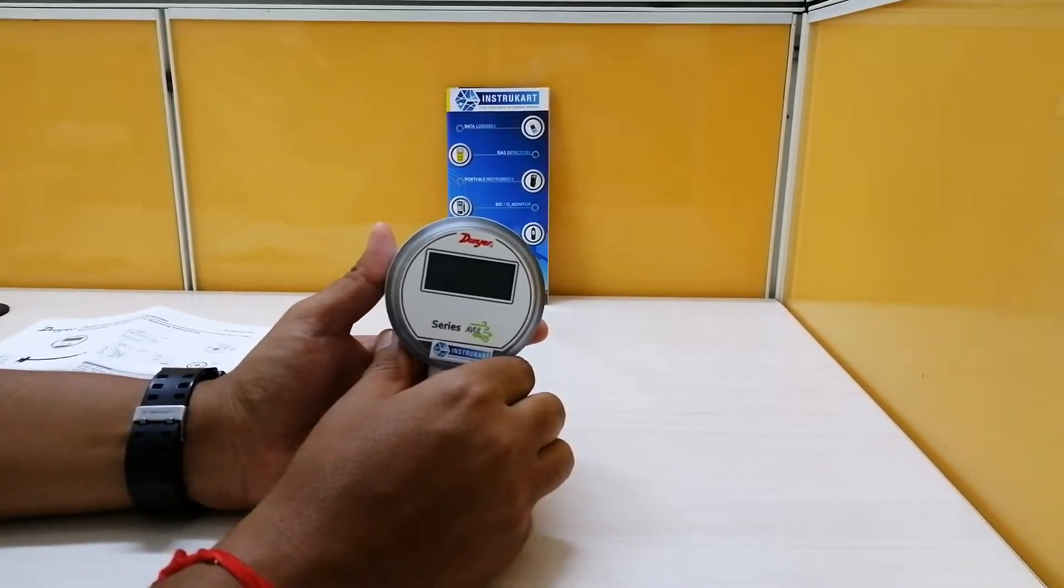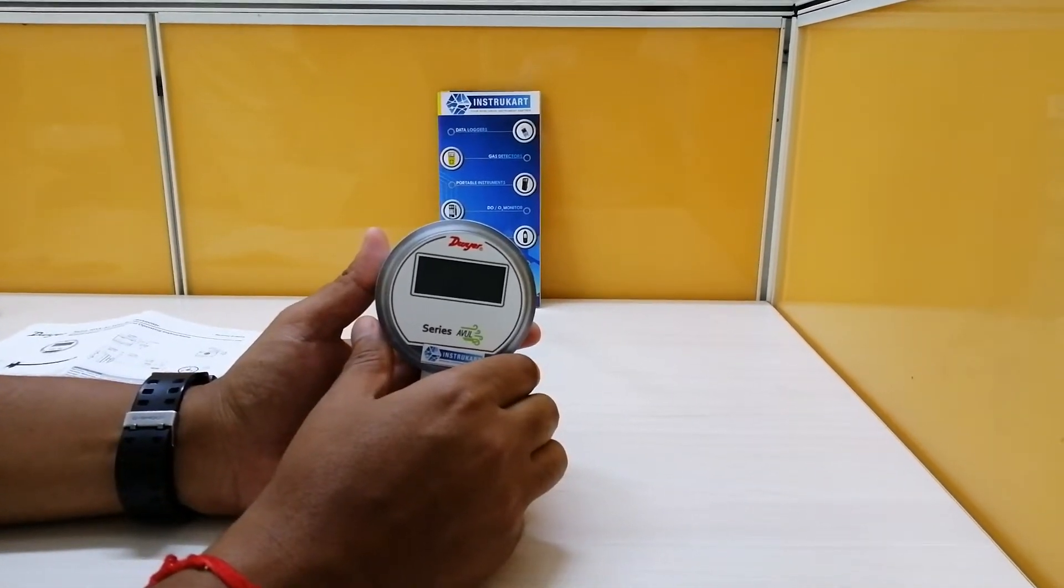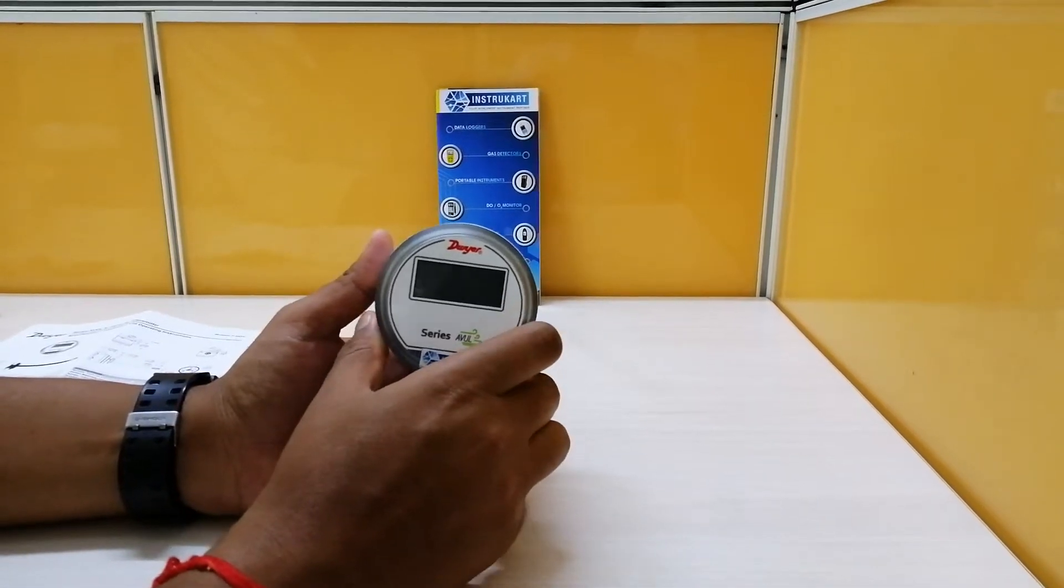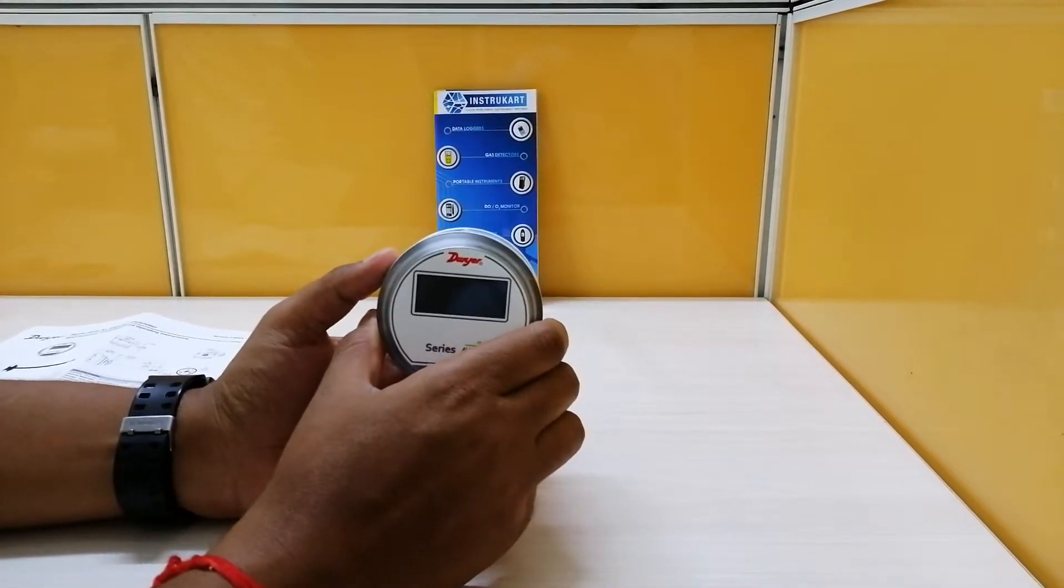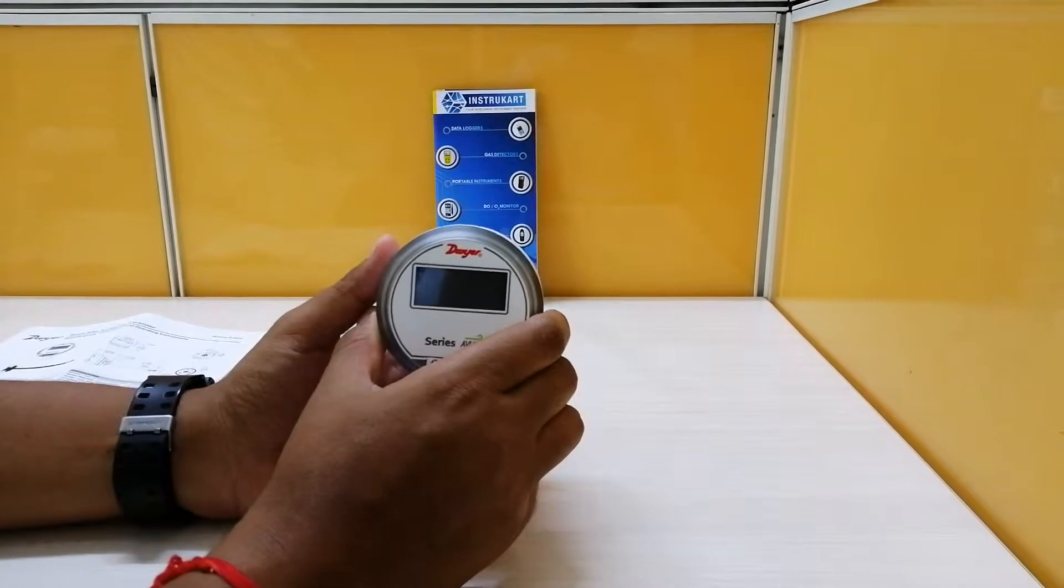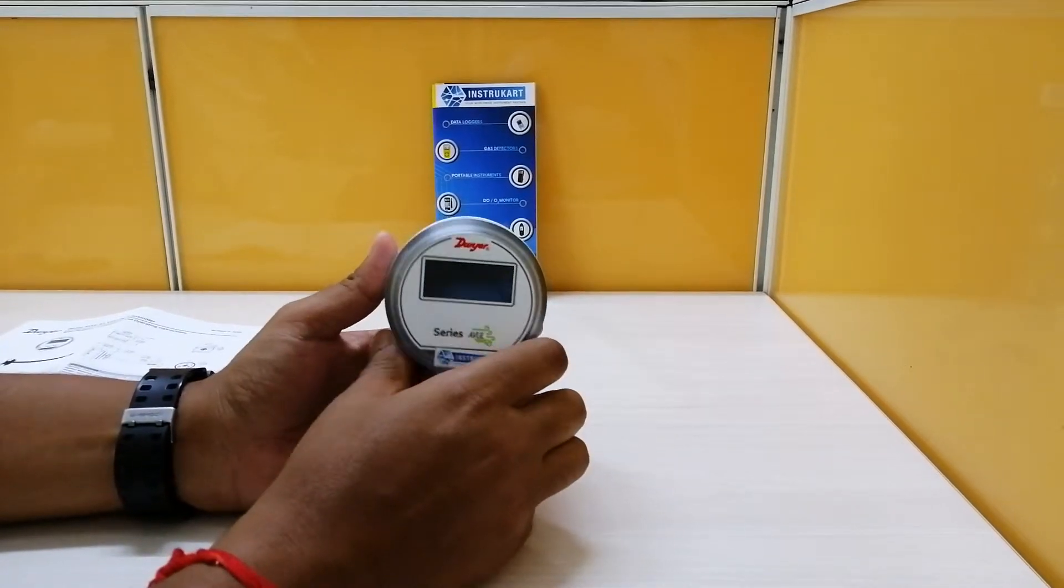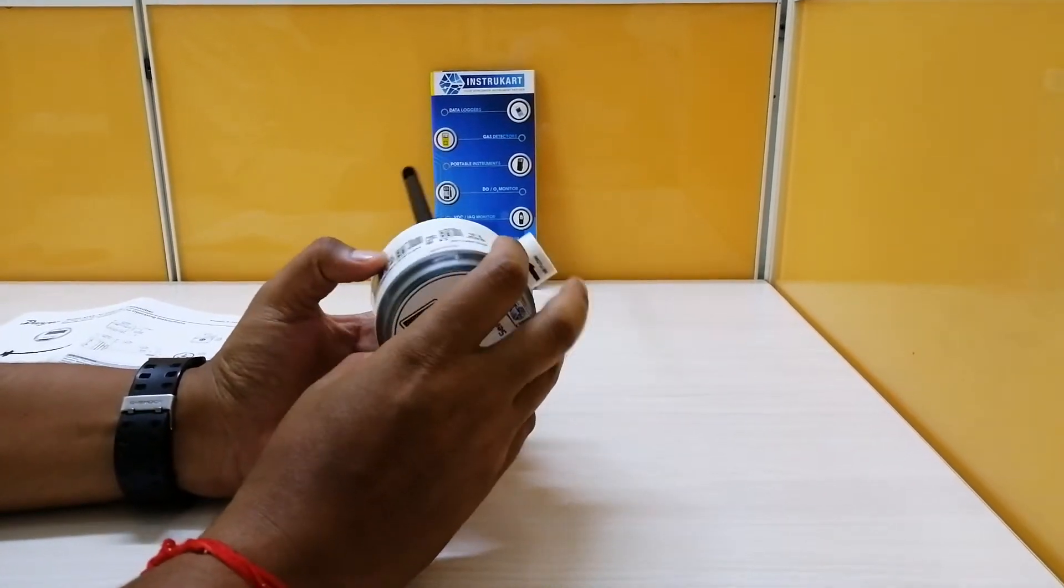Hello and welcome to InstruCart Holdings, your worldwide instrument partner. We have an air velocity transmitter from Dwyer which is from the series AVUL and the model number being AVUL5DA1 LCD.